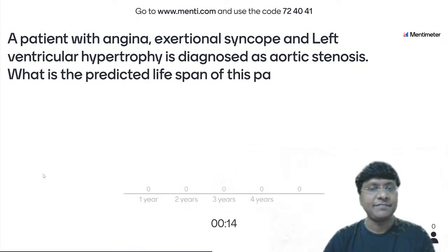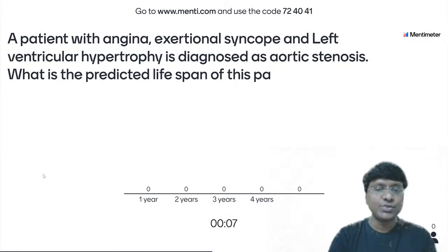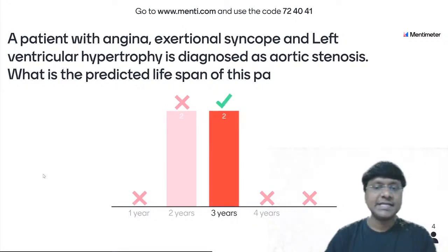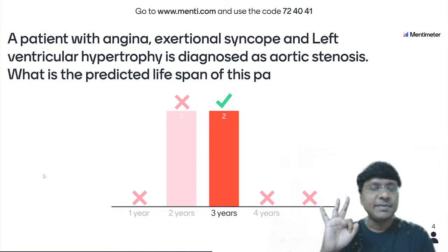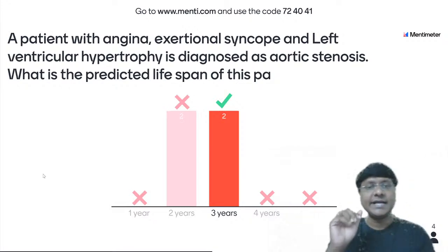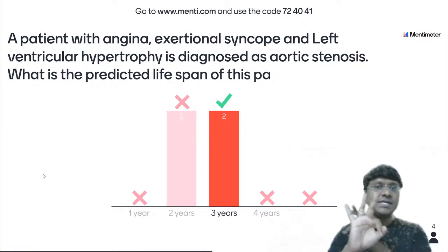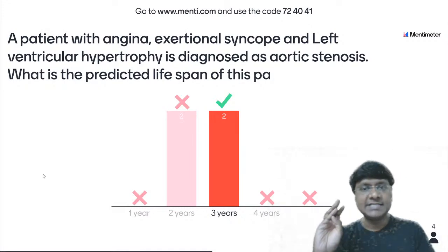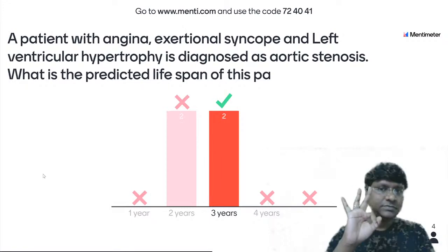A patient with angina, exertional syncope, and left ventricular hypertrophy is diagnosed with aortic stenosis. What is the predicted lifespan? The correct answer is three years. Remember the triad in aortic stenosis: Angina, Syncope, and Dyspnea — remember it as ASD. If the individual has angina and syncopal attack, the predicted lifespan is three years.